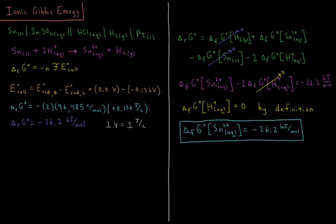This presents a conundrum: any electrochemical cell leaves us with only ionic formation energies. If we knew one, we could solve for the others, but without a reference we are stuck. To get around this, chemists define the standard Gibbs energy of formation of H⁺ aqueous cations to be zero by convention.